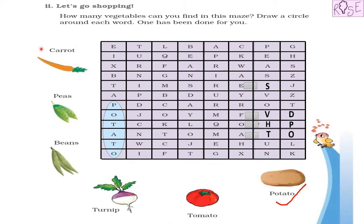So now we have to find all these vegetables in this maze. Yes, some letters are given across the maze, some letters are given downwards the maze, and we have to find these vegetables in this maze.